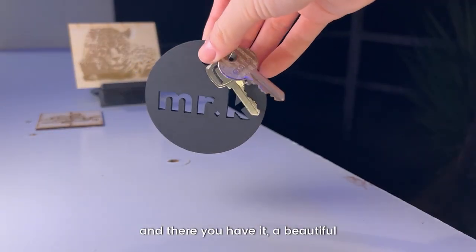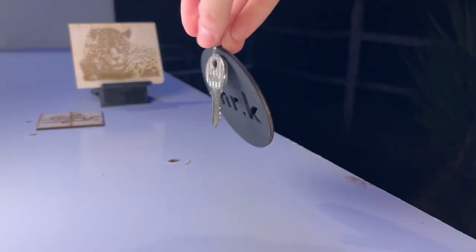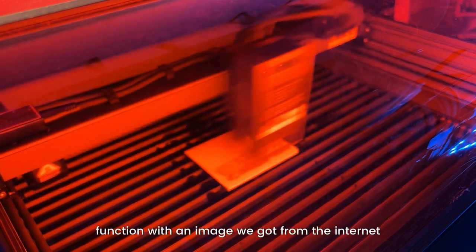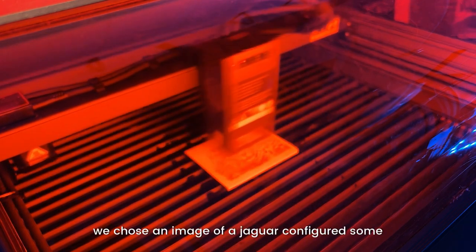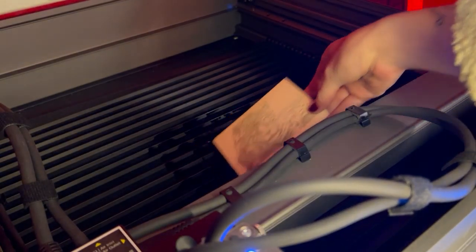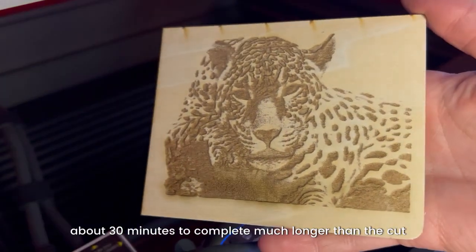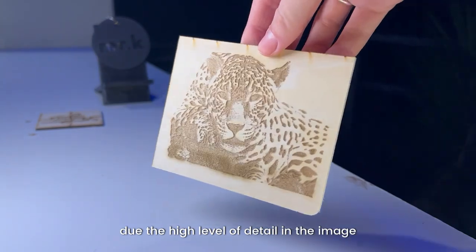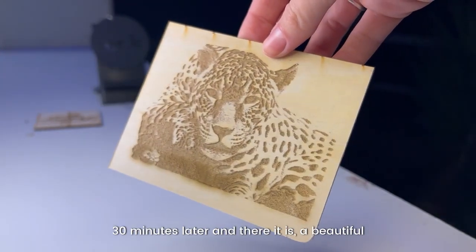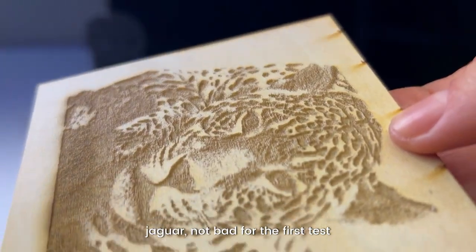Finally, we wanted to test the engraving function with an image we got from the internet. We chose an image of a jaguar, configured some parameters in LightBurn, and ran the test. We used 1000 speed and 20% power, which took about 30 minutes to complete, much longer than the cut, due to the high level of detail in the image generated by the different levels of relief. 30 minutes later, and there it is: a beautiful jaguar. Not bad for the first test.